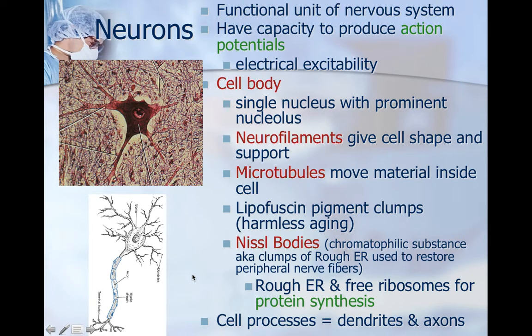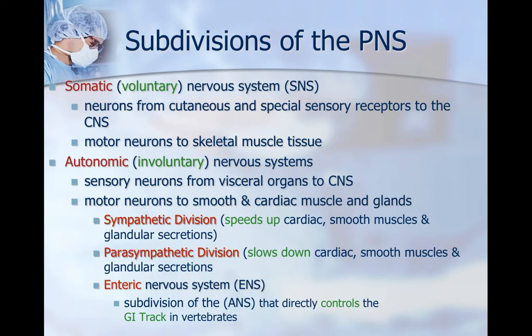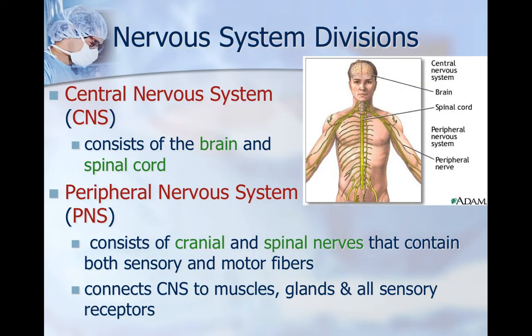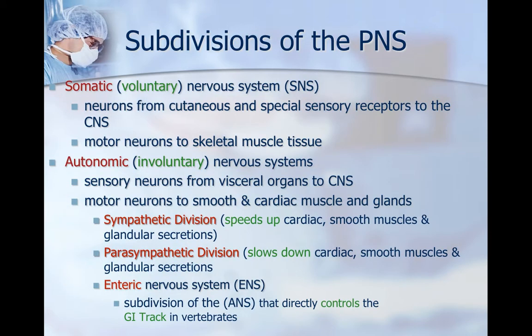So this is your introduction to the nervous system — not a lot right now, but there will be more to come. Let's focus on understanding the major organization of the nervous system: the central nervous system, peripheral nervous system, and all the subdivisions of the peripheral nervous system. Go ahead and work on your little activity and we'll take some more notes later on.